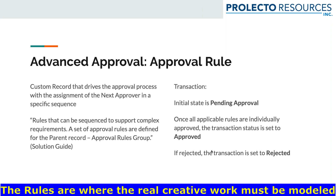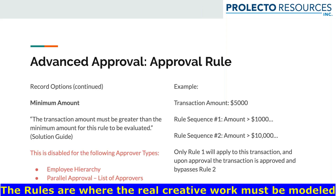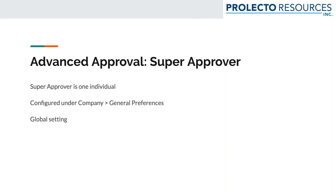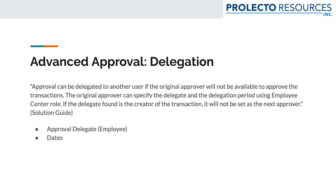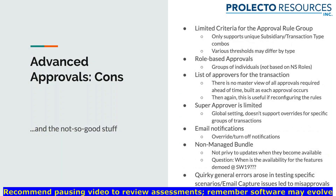Jumping to the rule itself — rules can be sequenced to support complex requirements. You have to specify an approval rule group and a sequence, and you set a minimum amount. There's also a super approver concept: one individual for the entire environment can be designated as super approver. Delegation is supported, with from and to dates for when someone will be out. And then we have rejection, which is probably the first thing anybody asks about when dealing with approvals — here's the good stuff, and then there's the not-so-good stuff.